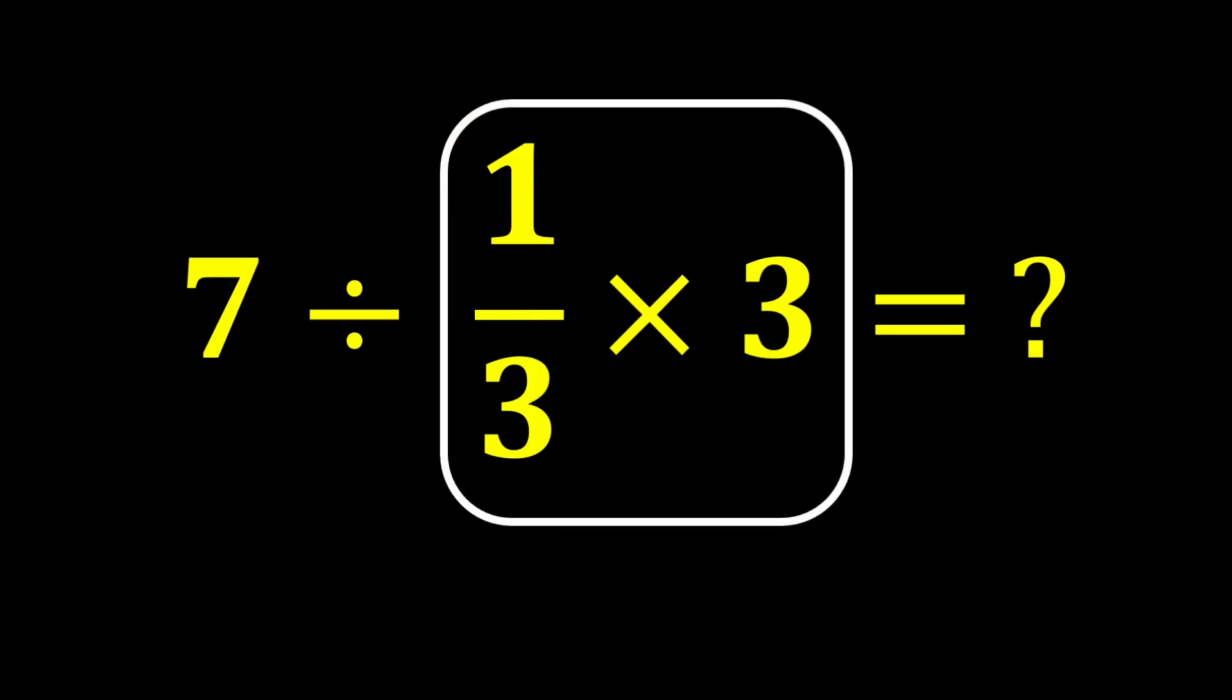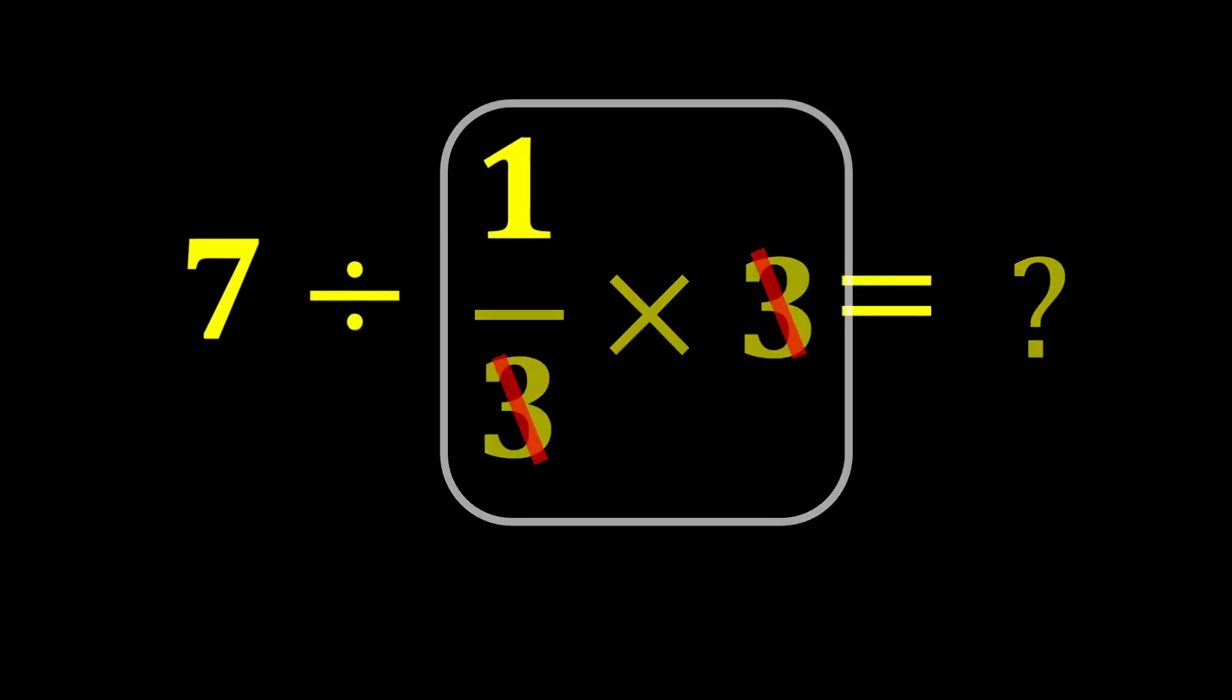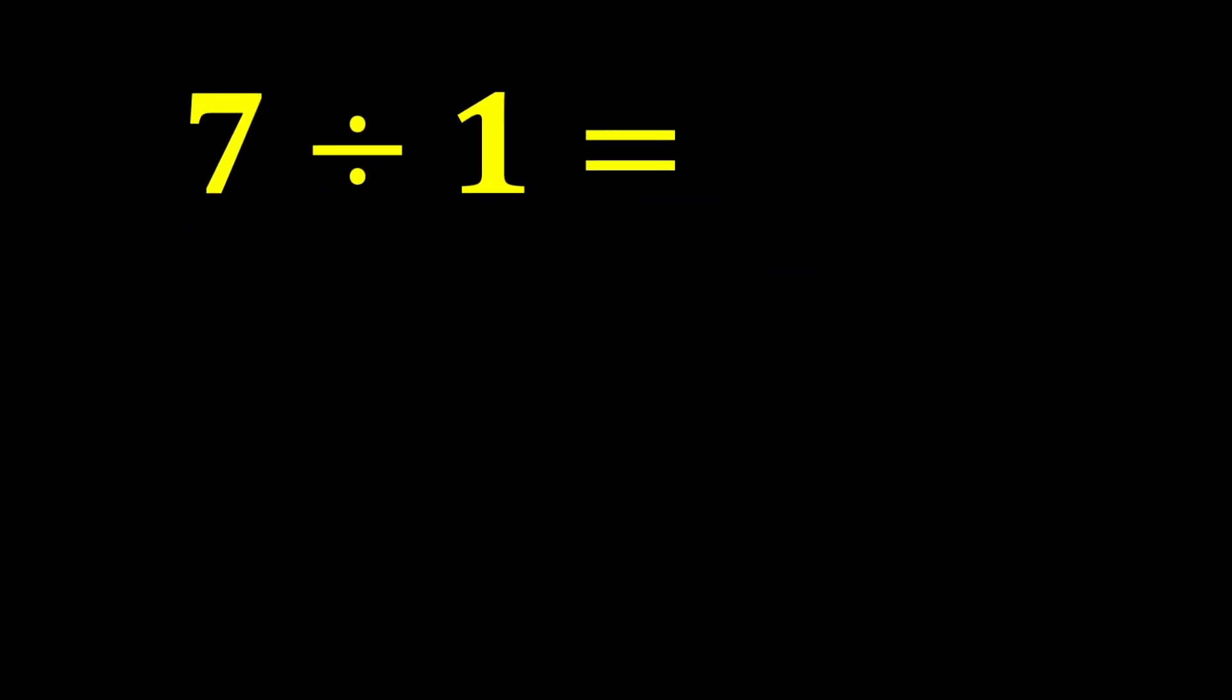First, we do this multiplication, 1 over 3 times 3. The 3's cancel each other out, leaving only 1. 7 divided by 1 gives us 7.